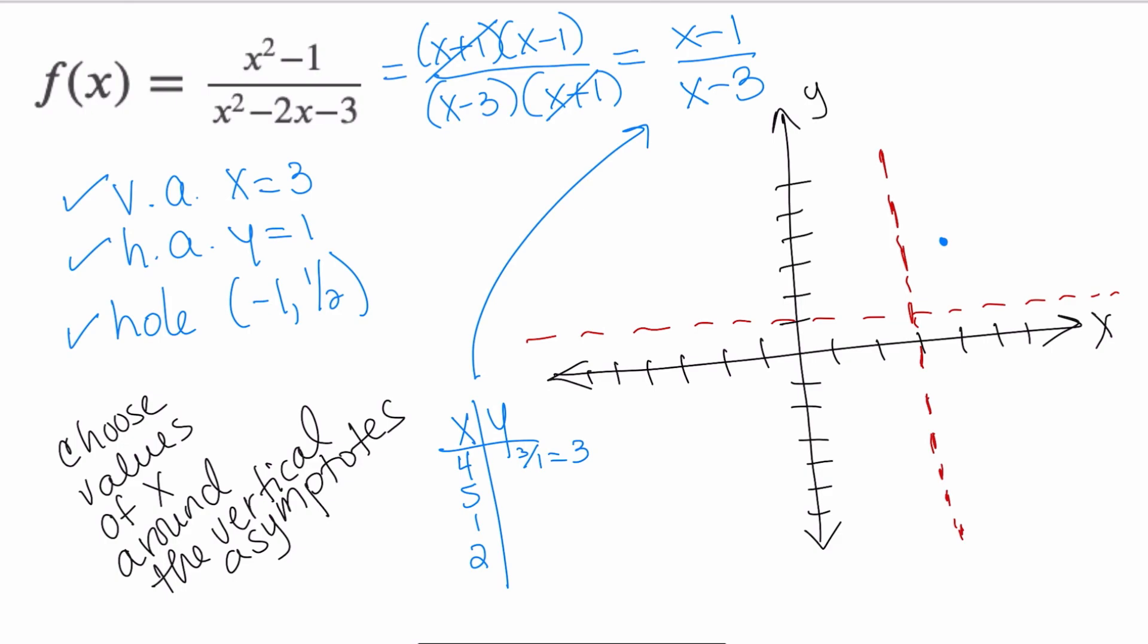I'm going to substitute 5. If I get 5 - 1, I get 4. 5 - 3 is 2. 4/2 is 2. So at 5, I'm at positive 2. And sure enough, this is what's happening with my graph. It's turning, getting closer to those asymptotes.